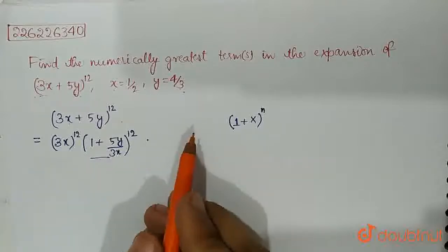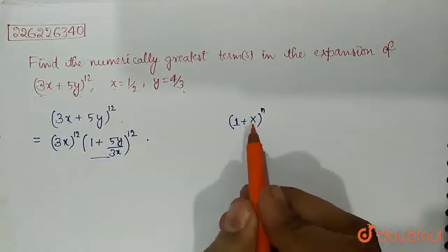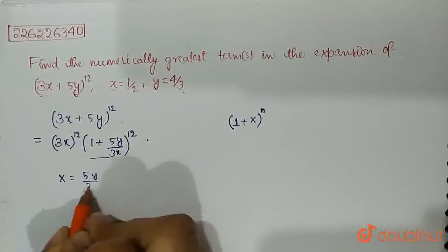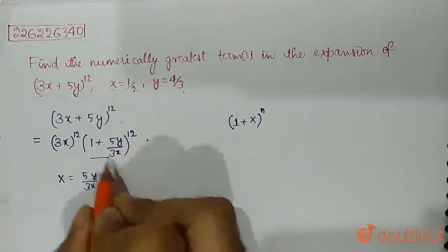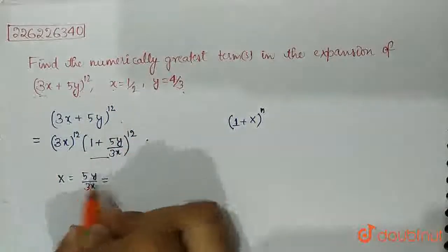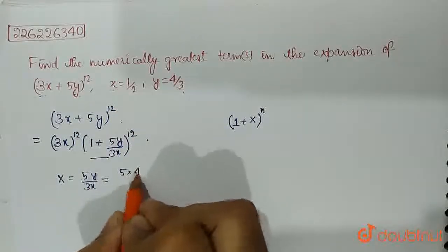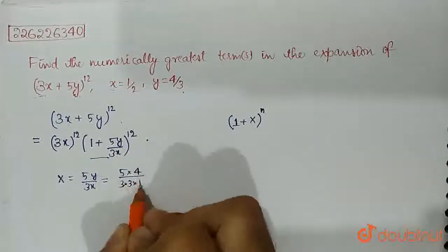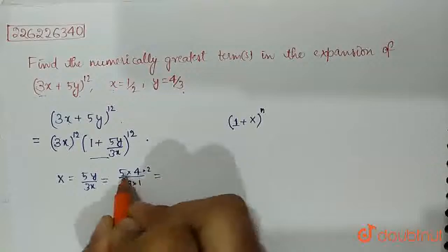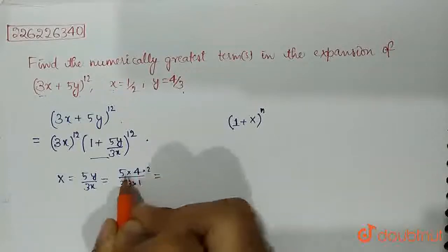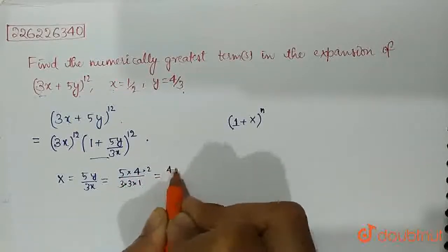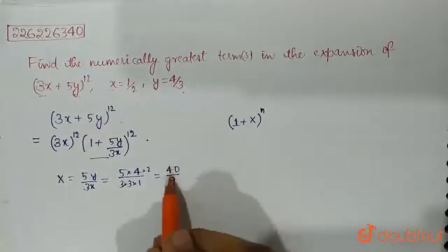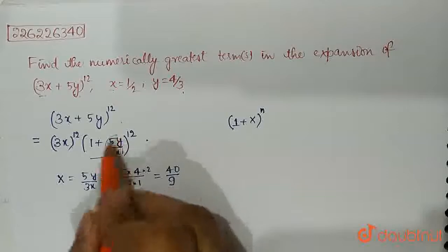Now, what is the value of x here? Here x is 5y upon 3x. We put the value of y and x here, 5 times 4 by 3 into, this is 3 times x is half. 5 for the 20 is 2 to 40 upon 9. So, the value of this whole thing is 40 upon 9.